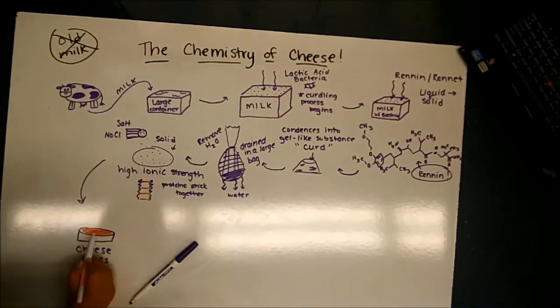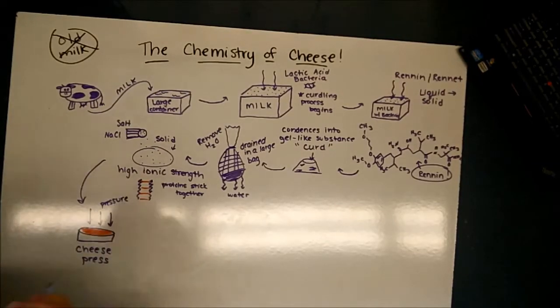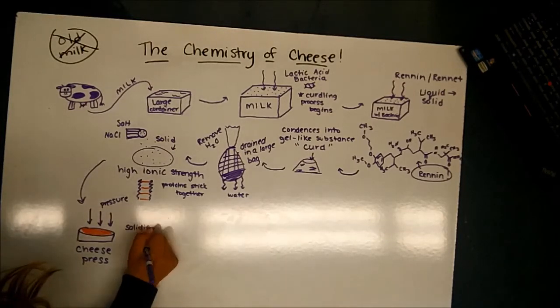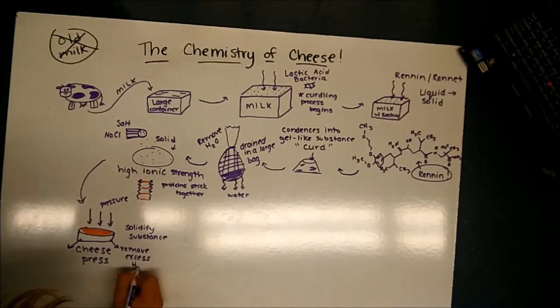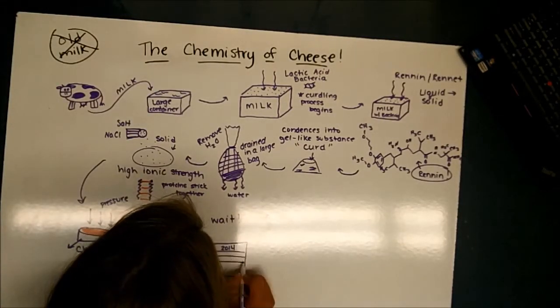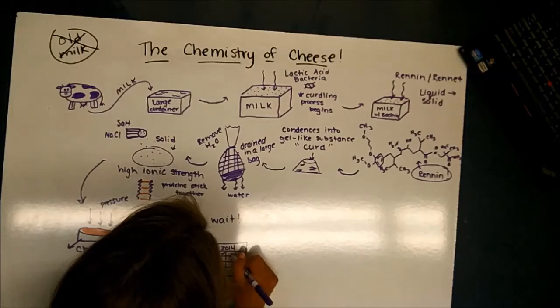Curds are then placed in a cheese press and large amounts of pressure are applied to the cheese to give it its shape and remove any water that has been left behind. The cheese is then left to age for several hours, days, months, or even years so that bacteria have time to ferment the lactose and develop the cheese texture.